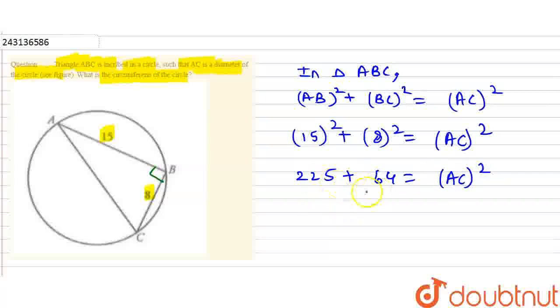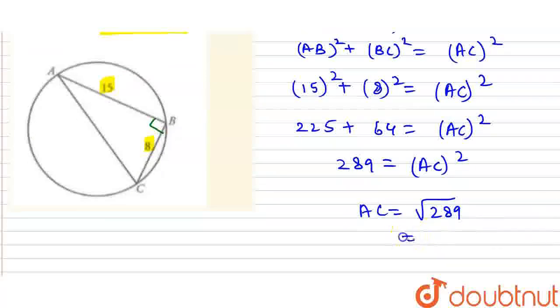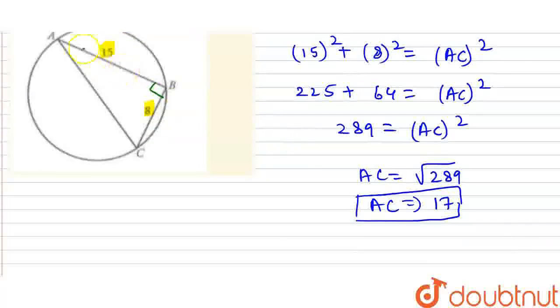AC is the square root of 289, which is 17. So AC = 17. Since AC is the diameter, the diameter equals 17.